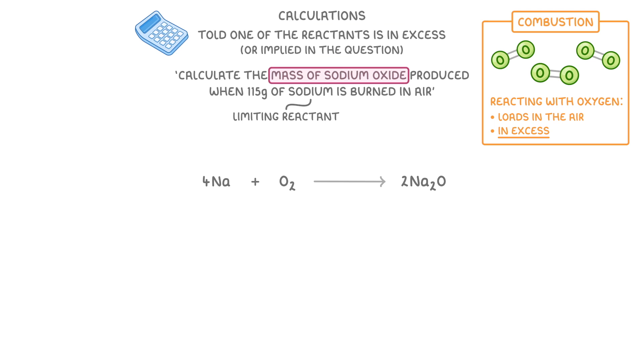As we want the mass of sodium oxide, we're first of all going to have to figure out the number of moles of sodium oxide that are going to be produced. And to do that, we have to work out how many moles of sodium we started with. For this, we use the equation moles equals mass over Mr. So 115 grams of sodium divided by Mr, which is 23, giving us 5 moles of sodium.